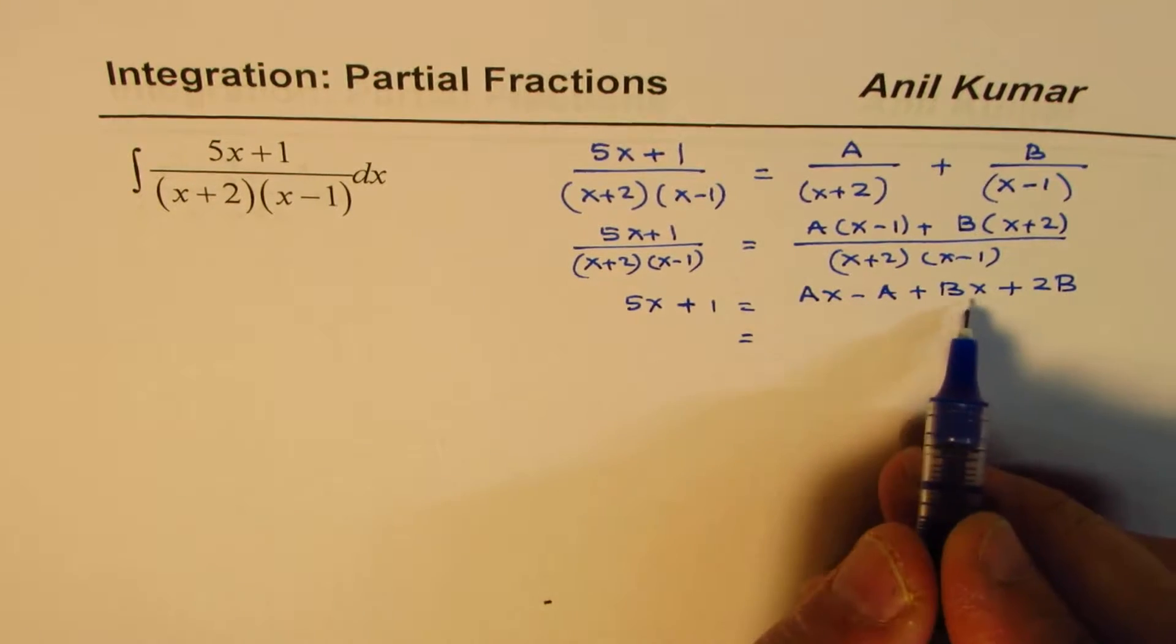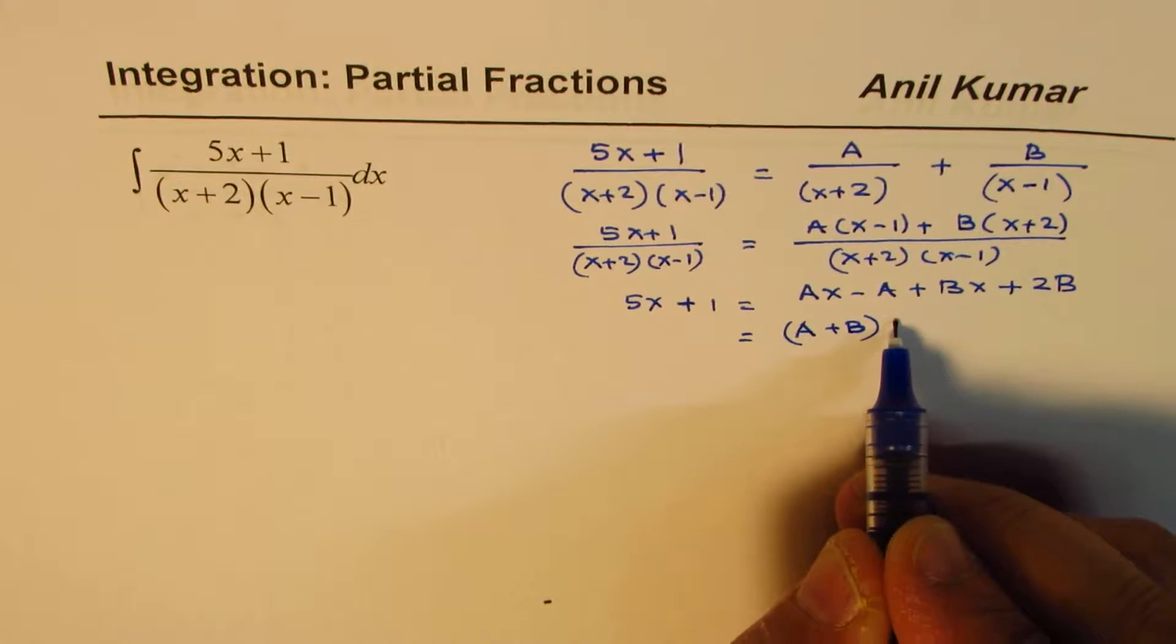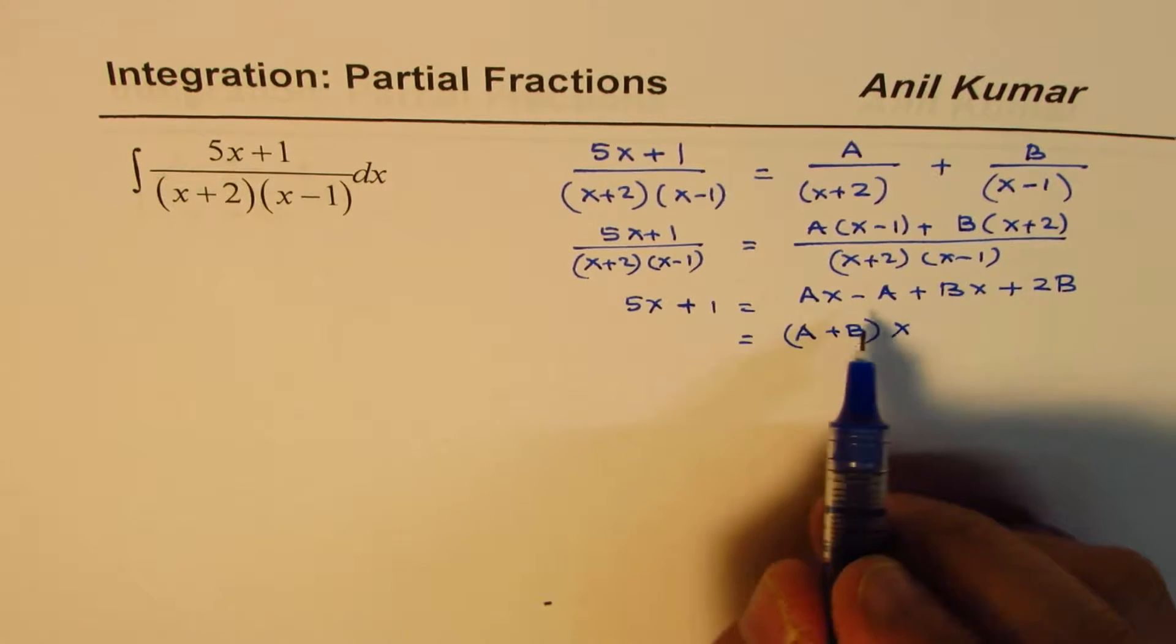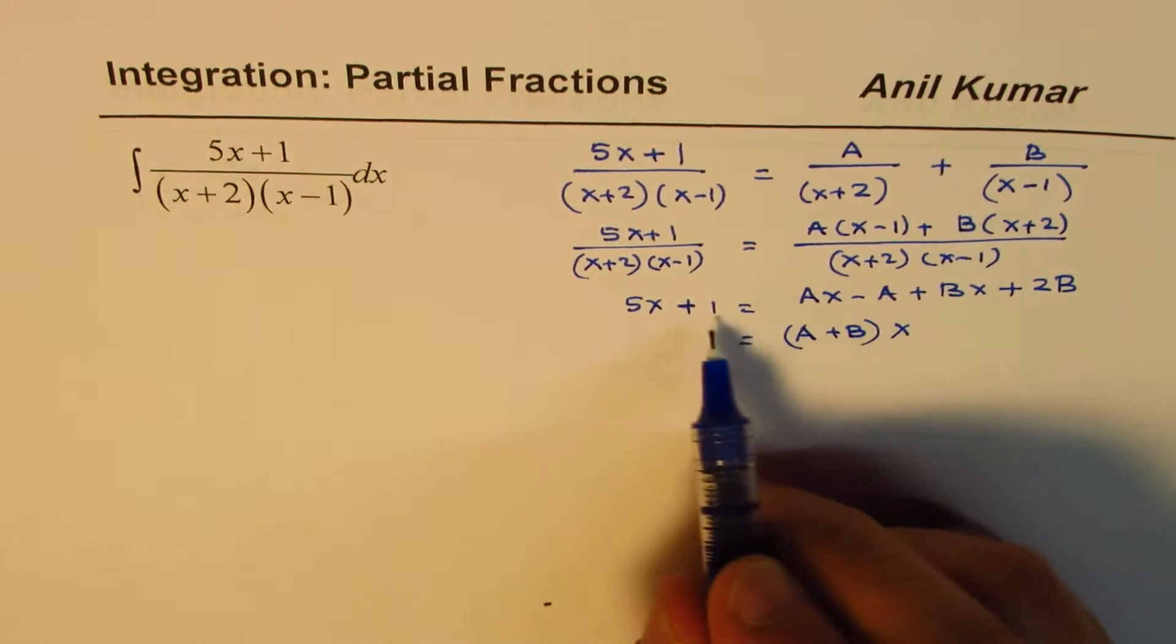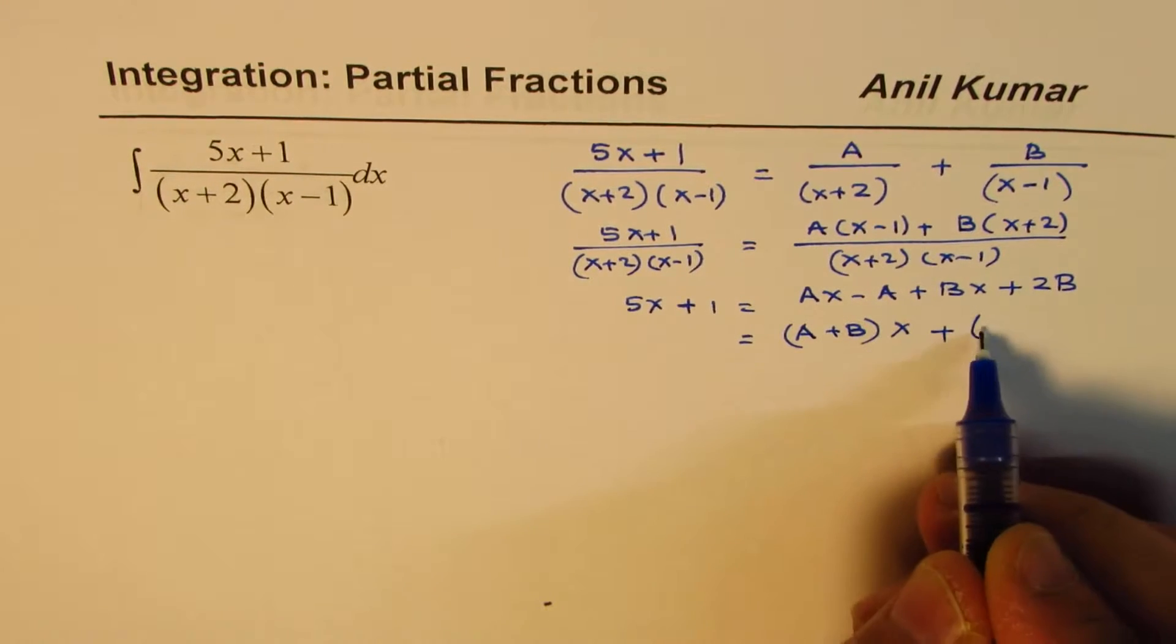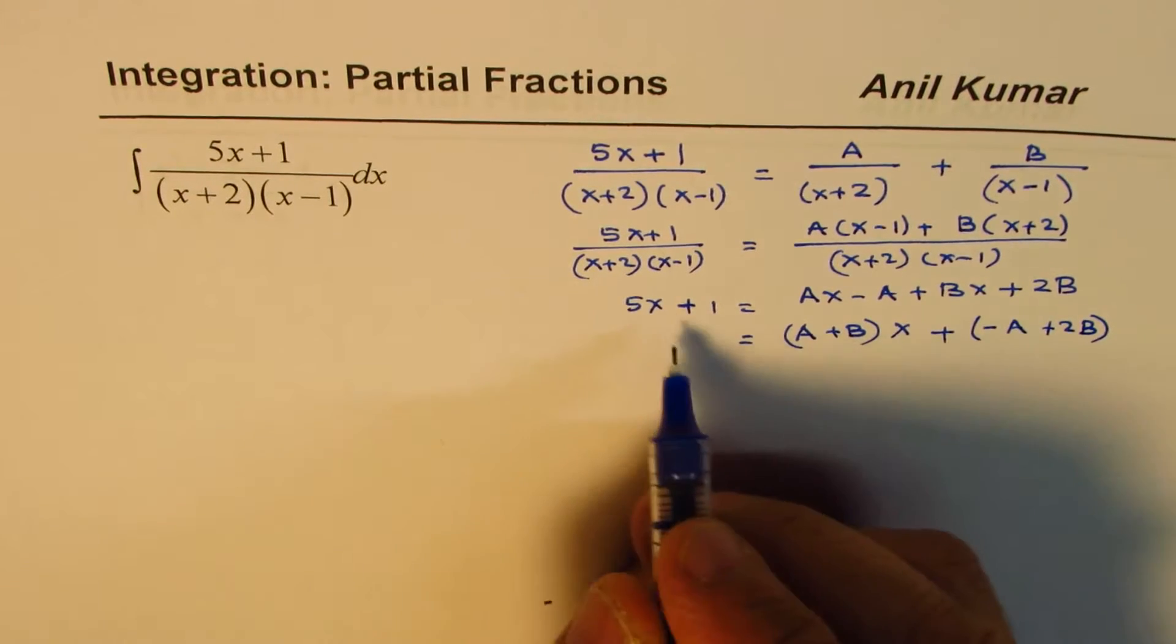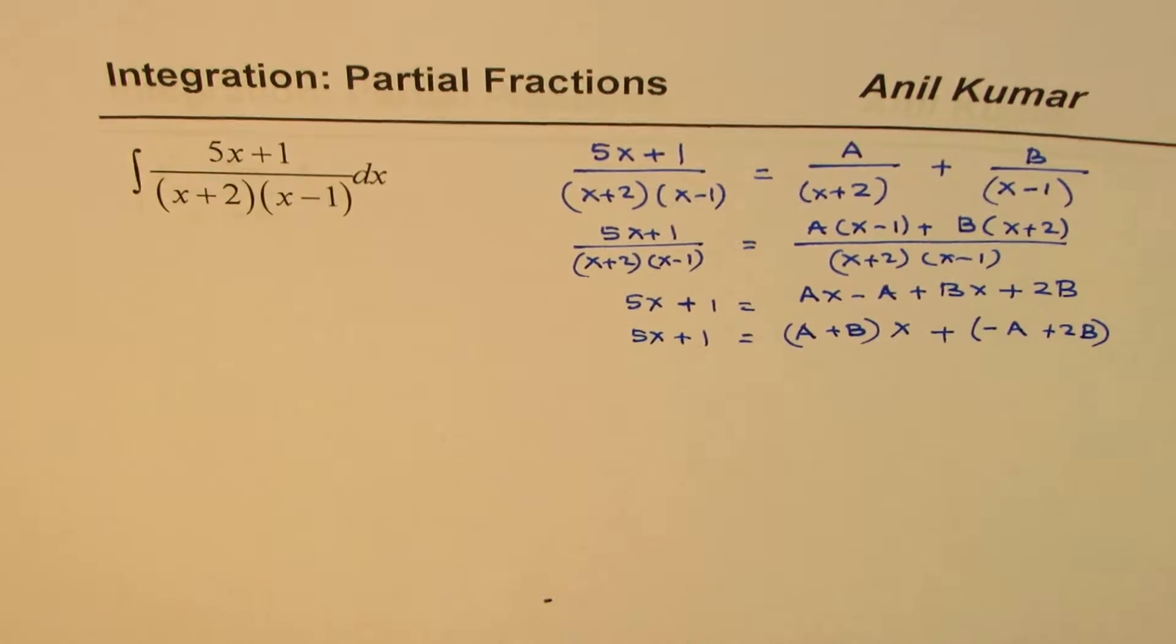So on the right side, if I take x common, I get a plus b times x, and if I take, I want to put this as plus here, in that case I get minus a plus 2b.